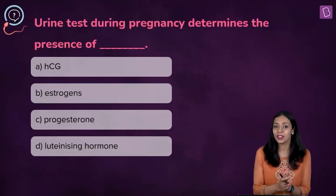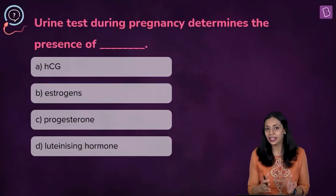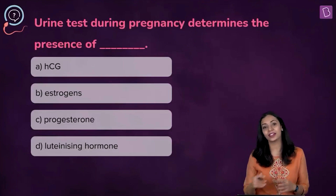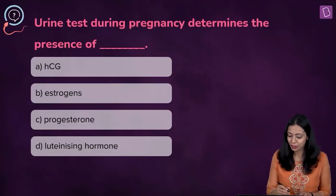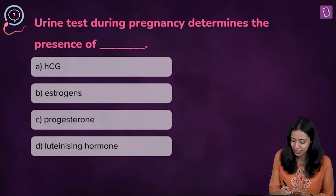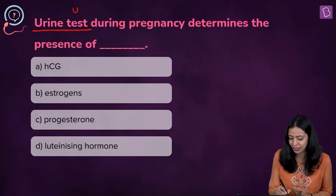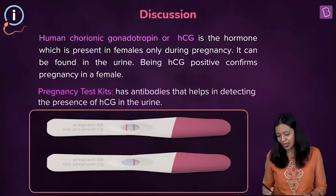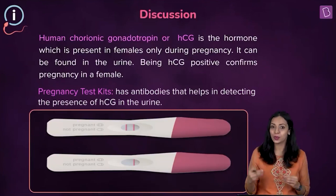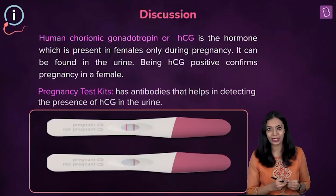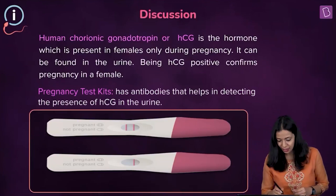Though missed periods is an indicator of pregnancy, it does not confirm that the woman is pregnant. One reliable test that confirms pregnancy is the urine pregnancy test. You may have seen in ads a stick that comes with the urine pregnancy test kit.